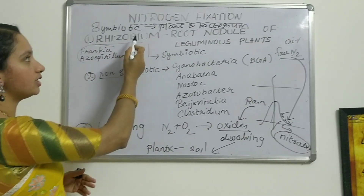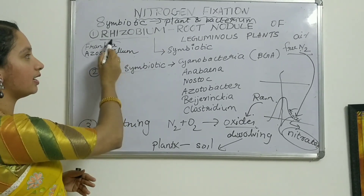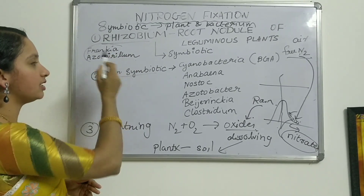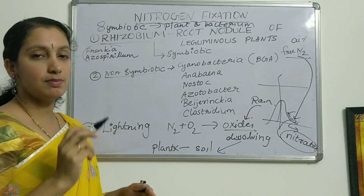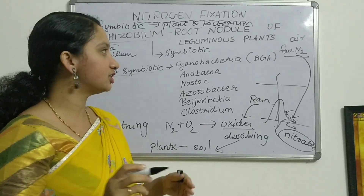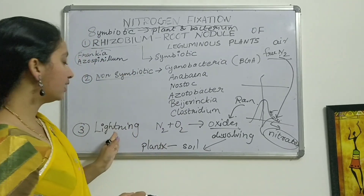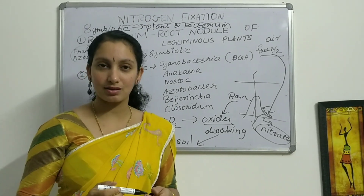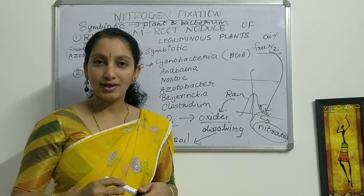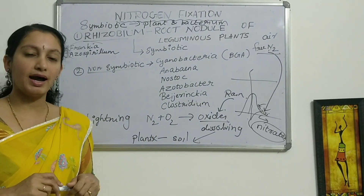So the first process is the symbiotic relationship by Rhizobium and related bacteria. The second one is the non-symbiotic relationship. And the third one is by the lightning process.